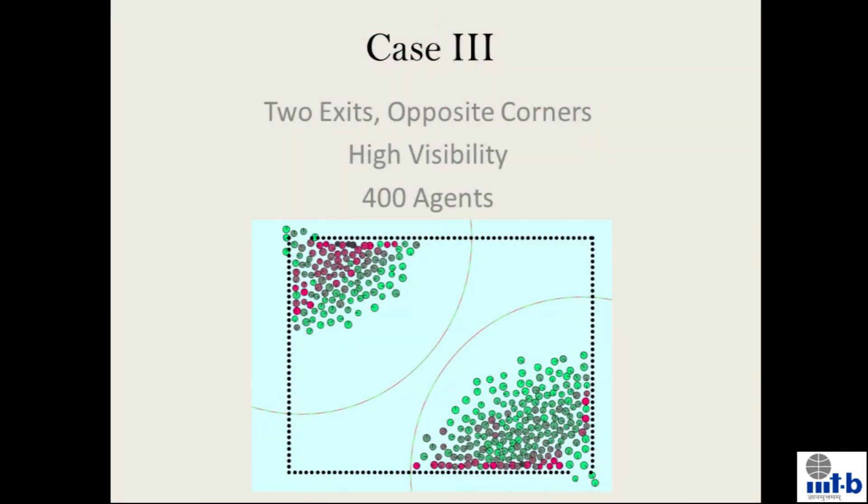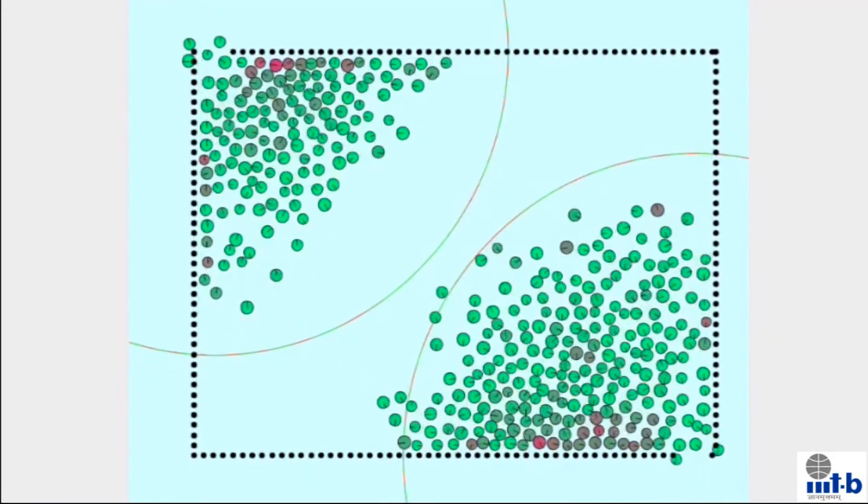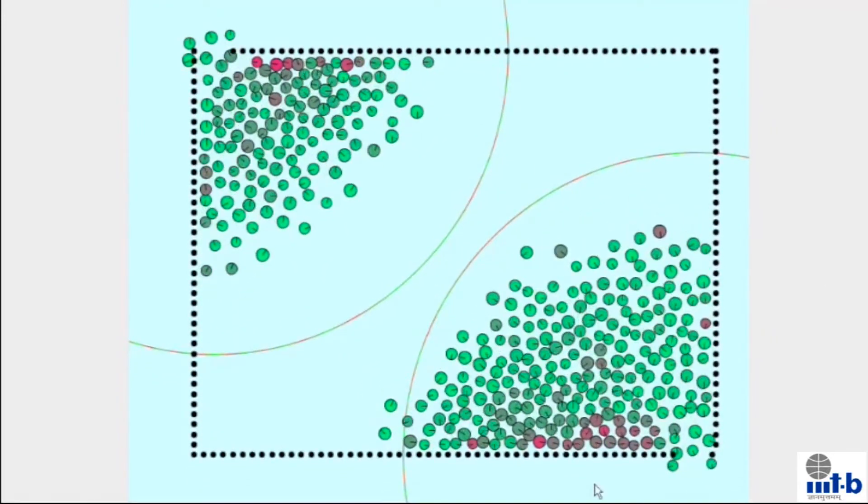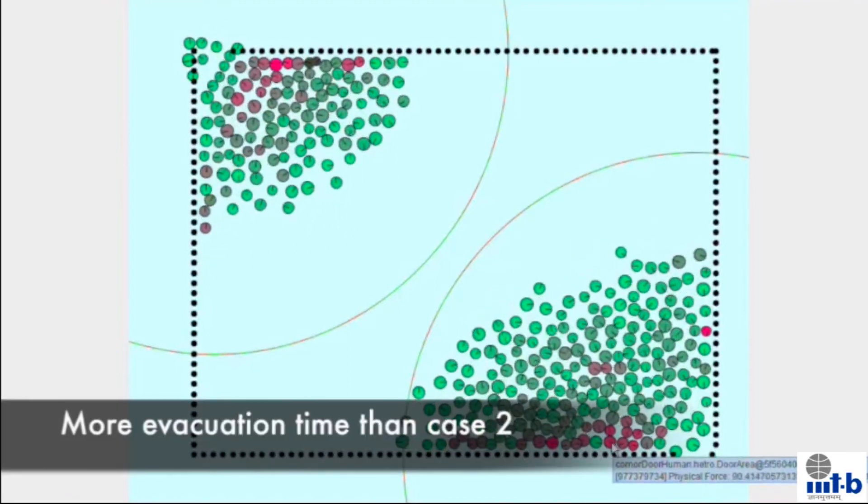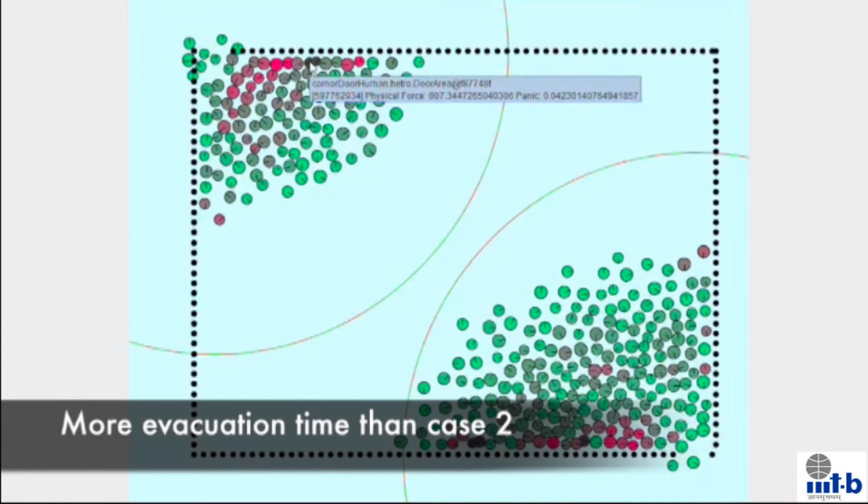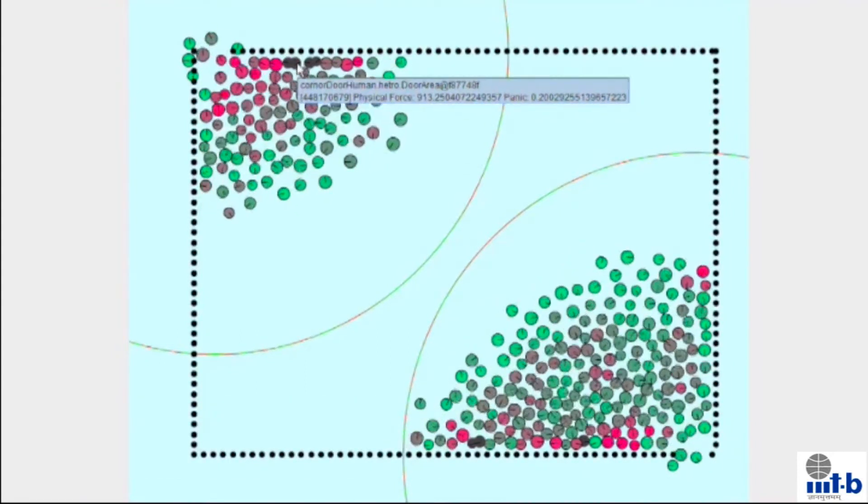In this case, we have both the doors at the opposite corners of the room with high visibility. In this case also, the crowd is equally divided between the doors but we will observe that the evacuation time is more than case two. Also, the injuries are more than the previous case.